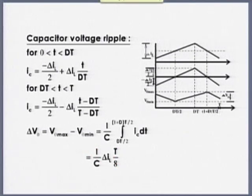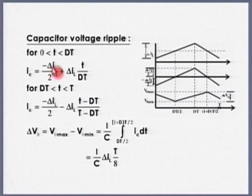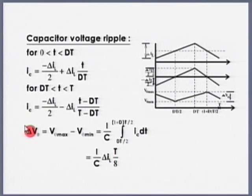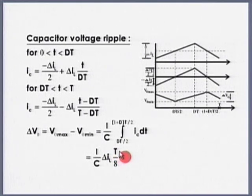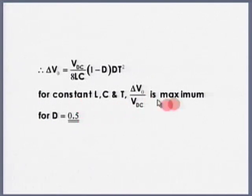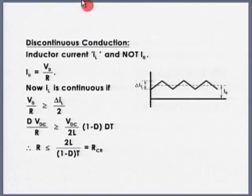That is all about the buck converter. Voltage and current ratings I can determine from the waveforms; the values of L and C I can determine by fixing the values of current ripple and voltage ripple. T corresponds to the switching frequency. Maximum ripple occurs at D = 0.5.